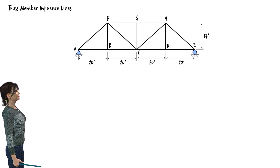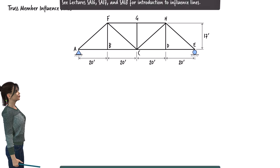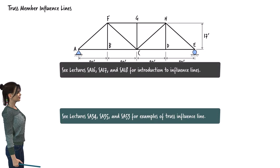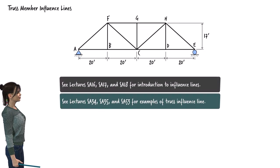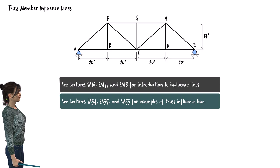Let's start the analysis of the truss by drawing the influence line for each truss member. Since we have presented and discussed how to construct influence lines in previous lectures, here I will only show the drawn diagrams without providing additional explanation. For a truss member in a bridge structure, the influence line shows how the axial force in the member changes as a unit load moves across the bridge.